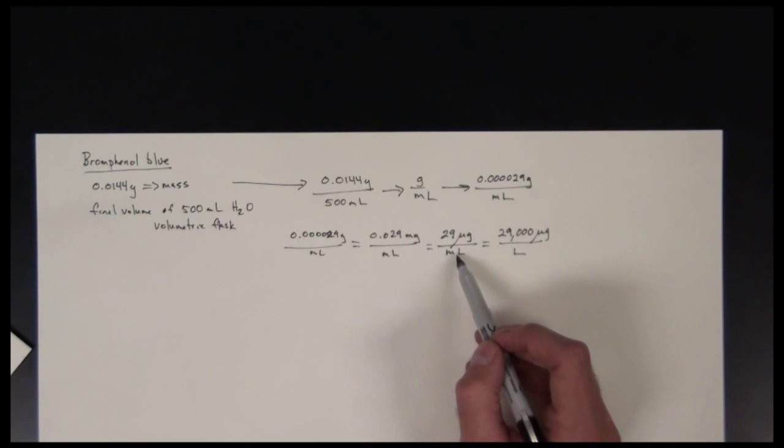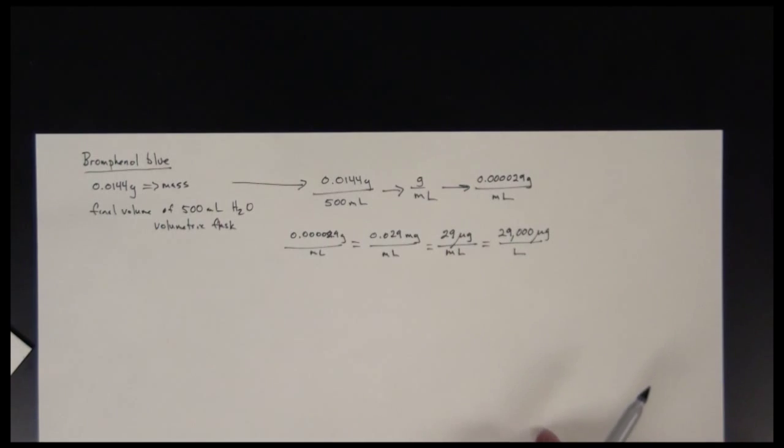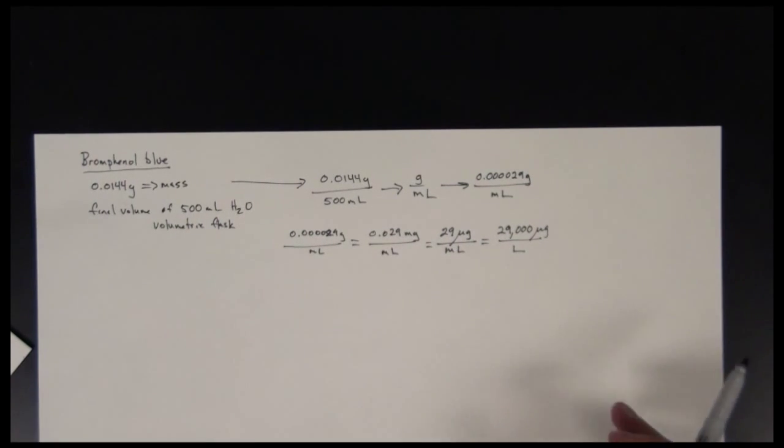So essentially, if I have 1,000 of these, I have 29,000 units. So 29,000 micrograms per liter is another way we can communicate this particular concentration.